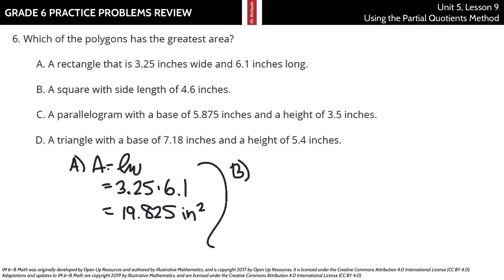B, a square with a side length of 4 and 6 tenths inches. Well, side squared, or side times side, or length times width, 4 and 6 tenths times 4 and 6 tenths is going to be 21 and 16 hundredths square inches.